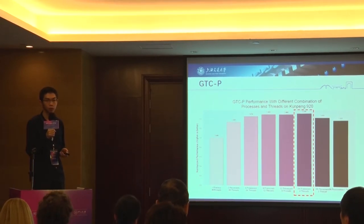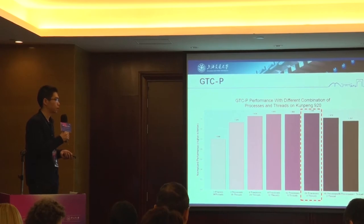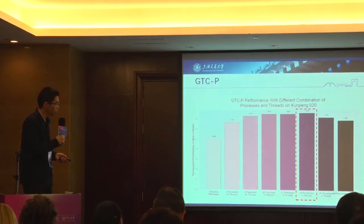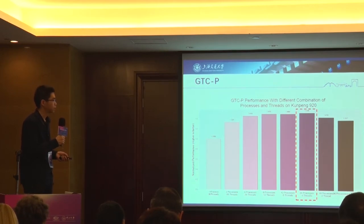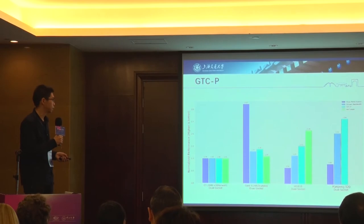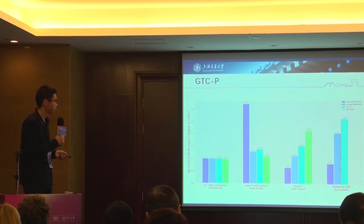When we use four threads per process and 24 processes per single node, we get the best performance. In the cross-platform comparison, although the 6148 has the best double precision performance, the 920 actually achieves the best performance on GTC-P.